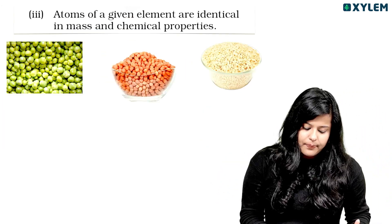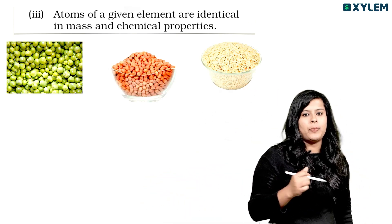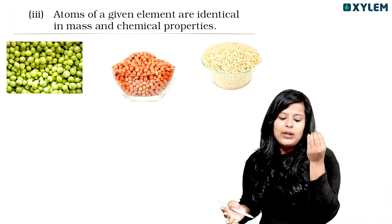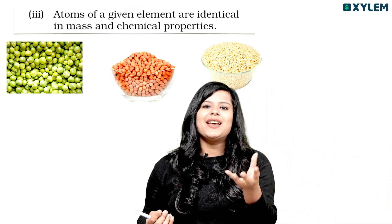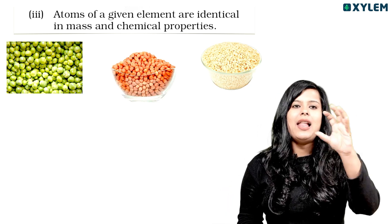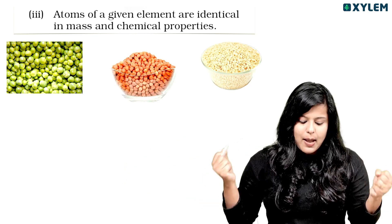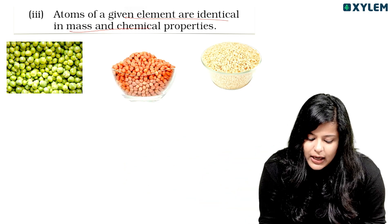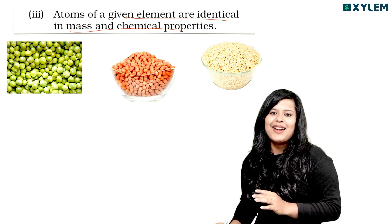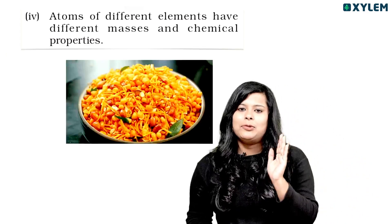Atoms of a given element are identical in mass and chemical properties. I'll demonstrate with a green piece example — it is like a unit. No matter how much the mass is, all atoms of the same element are made up of the same kind. Every green piece is the same shape. So this is what identical mass and chemical properties means. From a green piece, it has the same taste — it is the same.